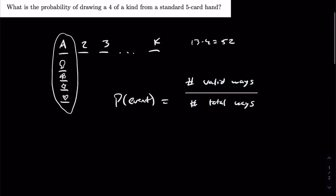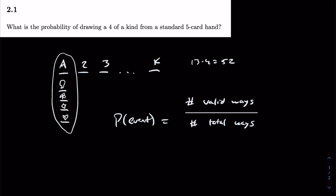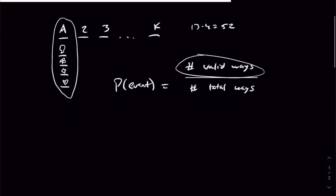For this problem in particular, let's start by counting the number of valid ways. We have five cards that we are choosing from our deck of 52, and we want four of them to be of the same rank. We'll denote this general rank to be A. So four of them have rank A, and the fifth card can be any different rank — we'll call it B.